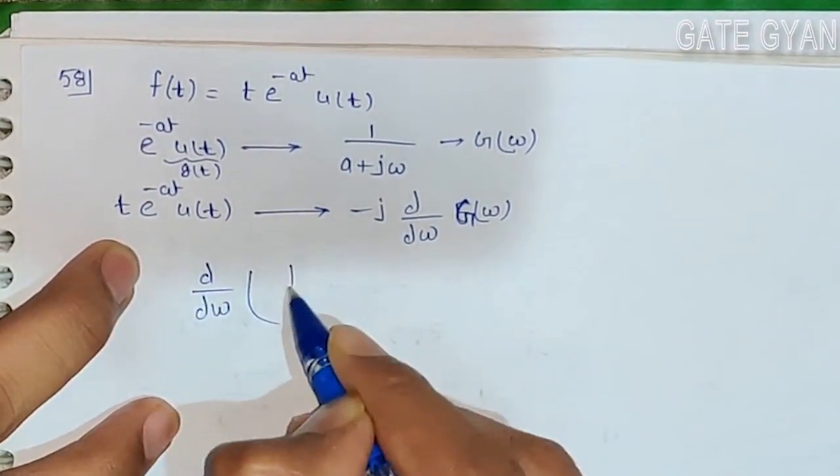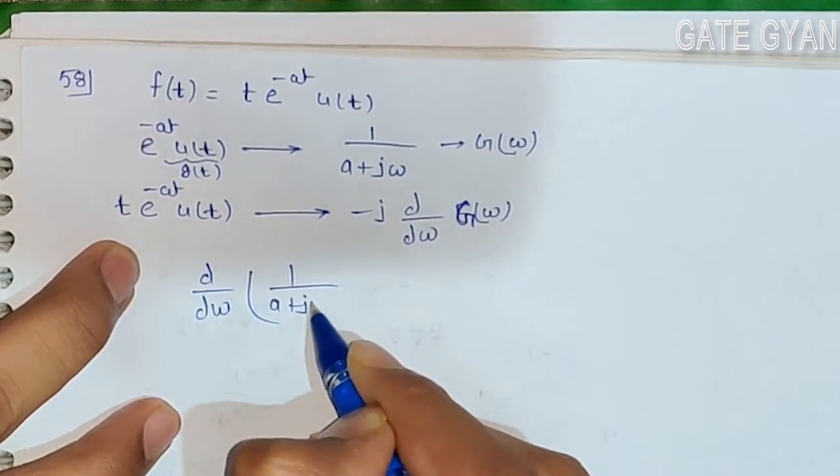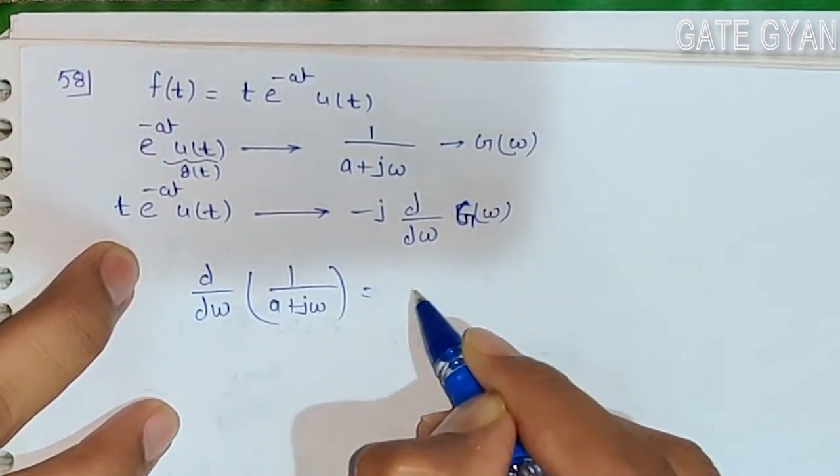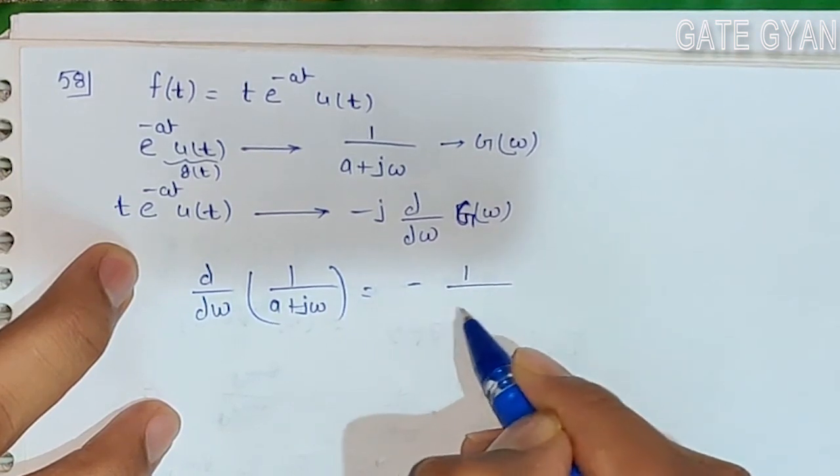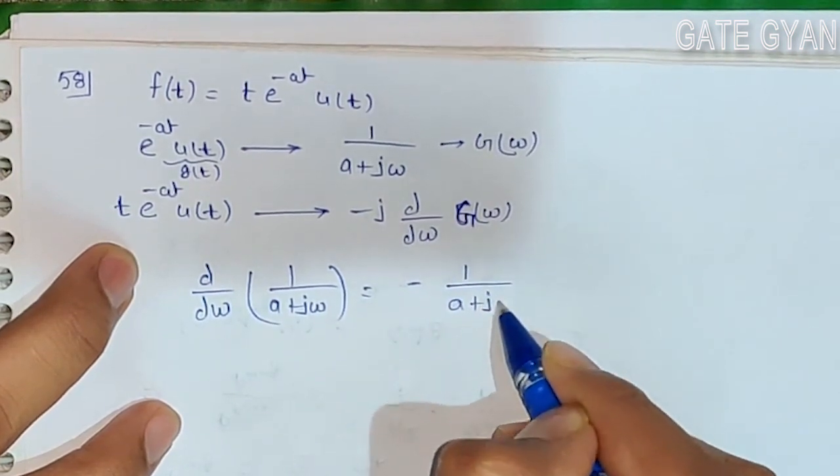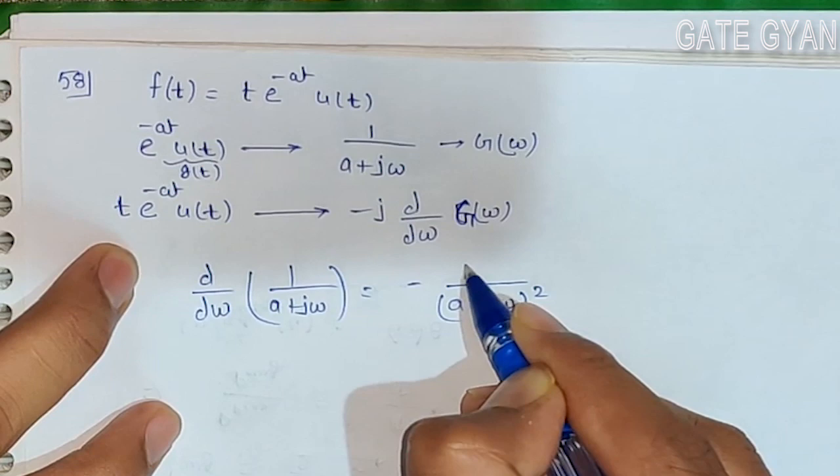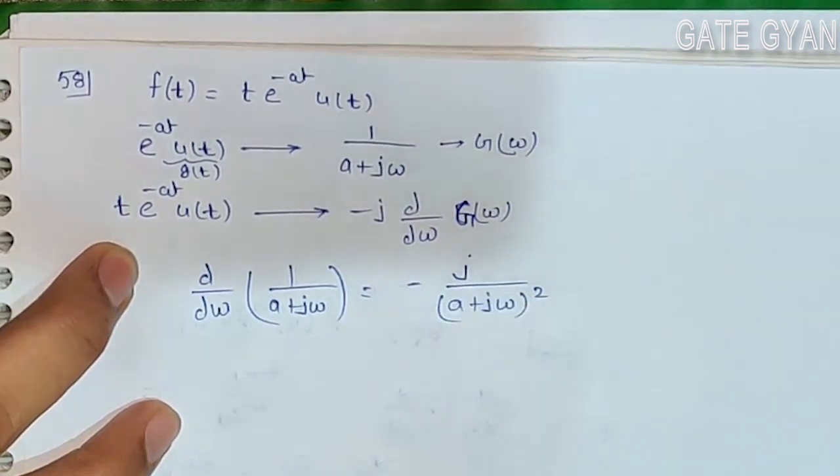The derivative d/dω of 1/(a + jω) equals -1/(a + jω)² multiplied by j.